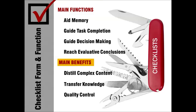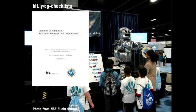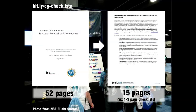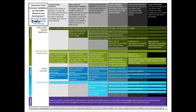Those of you who have funding from the National Science Foundation may have heard of the Common Guidelines for Education Research and Development, put forth by NSF and the Institute for Education Sciences. I boiled this 52-page document down into six one-to-three page checklists — one for each of the six types of research outlined in the Common Guidelines. It's much less dense and easier to locate the key points of each type of research. I actually took this one step further and boiled down the content into a one-page graphic overview.